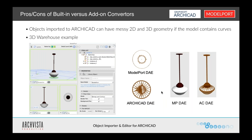If we bring this in using the ARCHICAD option, it's going to look like this in plan, and it's going to look like this when we look at it in 3D. If we use the Model Port option — which I'll show you in more detail in a minute — this is the new interface for Model Port. We're going to have a nice 2D graphic on the 2D side and a very nice 3D graphic without all the extra line work on the 3D side.